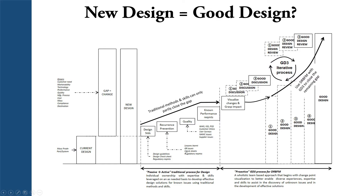Traditional methods involve design standards, recurrence prevention, and using lessons learned and previous experiences from past products. Then we follow standard quality check and quality assurance processes using surveys and customer feedback. We also use known performance requirements — going to the lab, doing certain tests, having samples handled by customers, and getting their feedback.